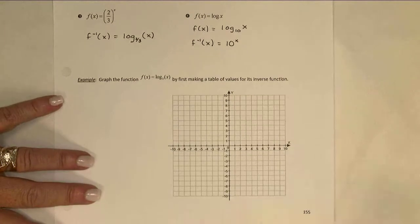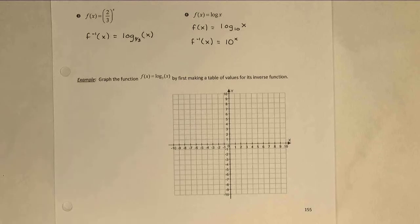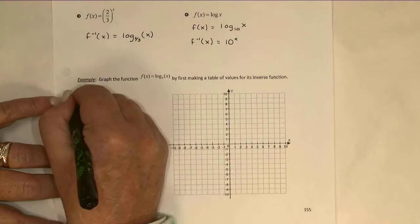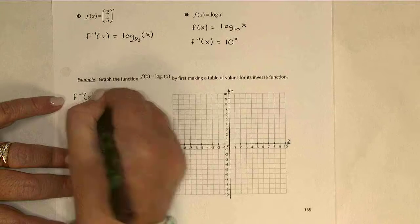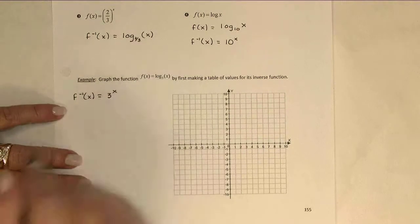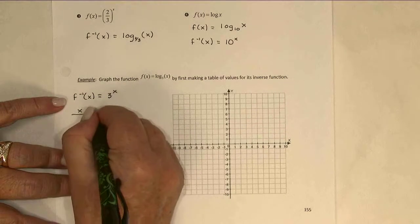If I wanted to graph a logarithm function, probably the easiest way to go is to start with the inverse, the exponential, because I already know how to calculate those really well. And then I'll just use that idea of flipping the x's and the y's to find the table of values for the log. So here, I'm going to say, well, I know the inverse function of the log base 3 would be the exponential base 3. So let me start with a quick little table of values for that.